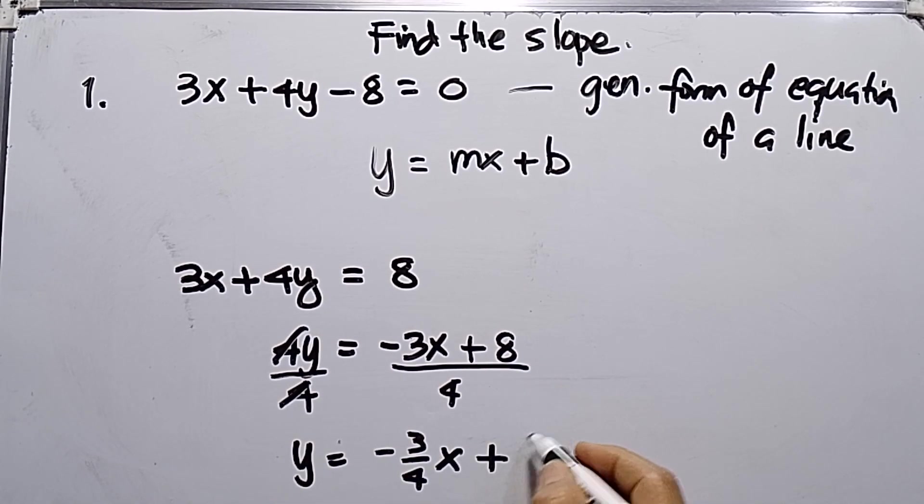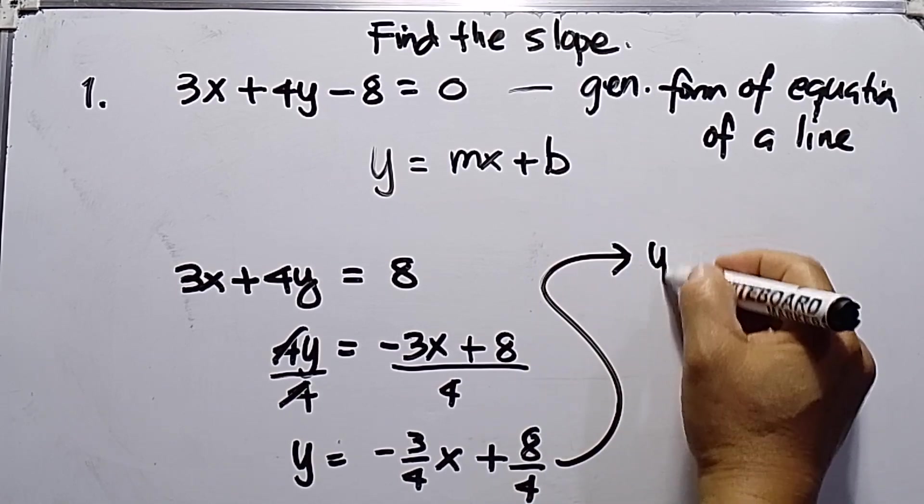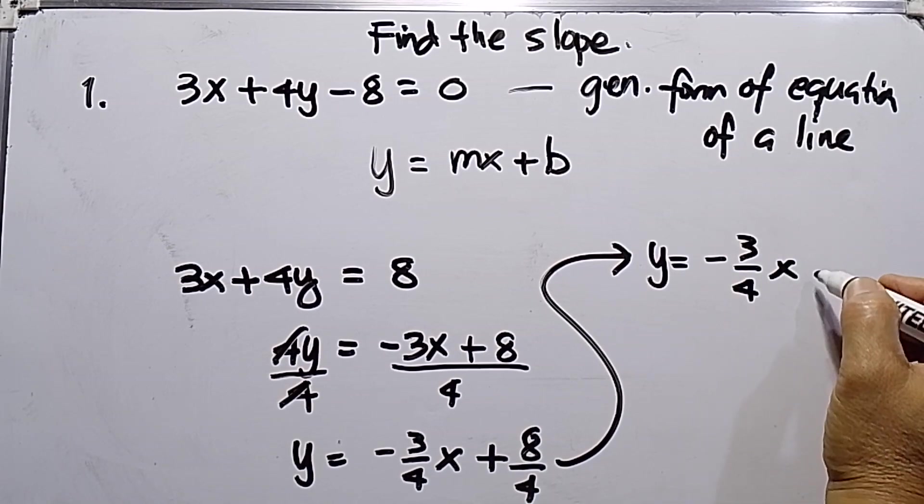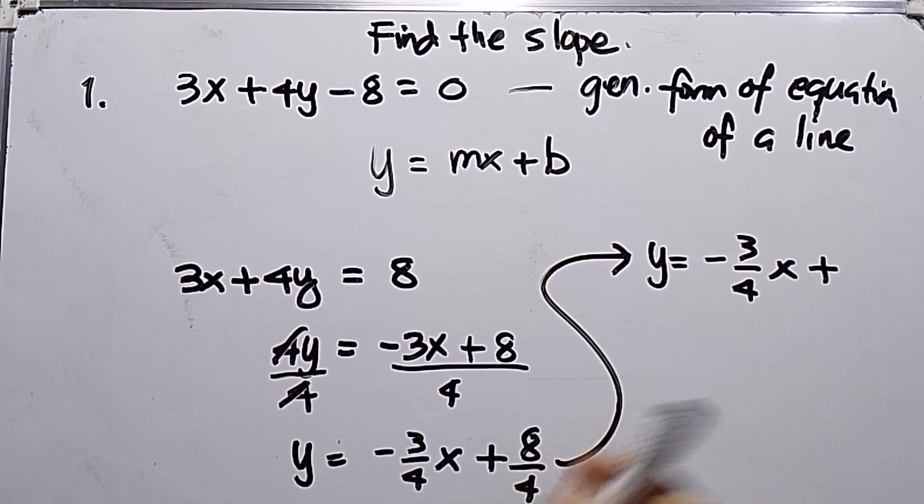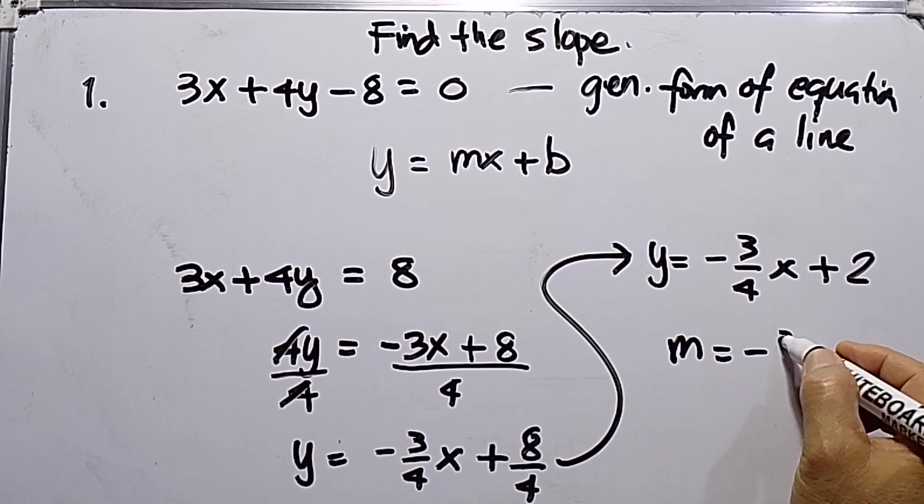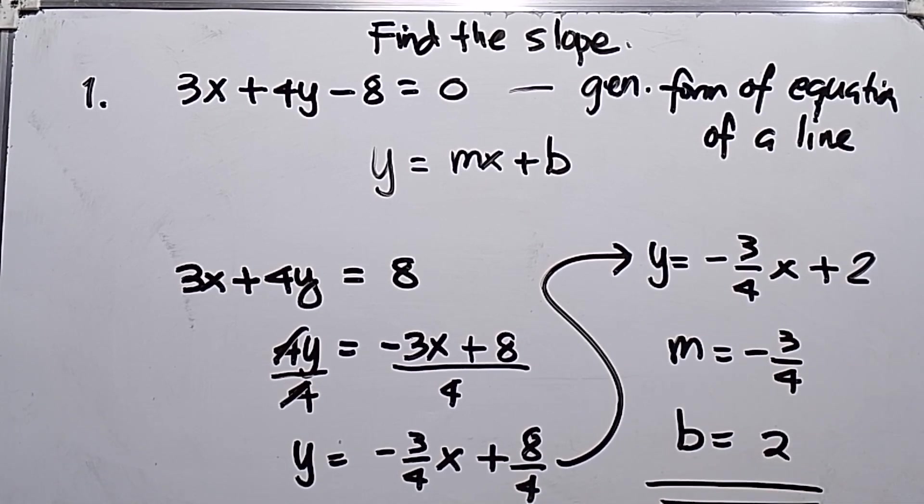Plus 8 divided by 4 is 2. So my slope is negative 3 over 4, and the y-intercept is positive 2. That's all.